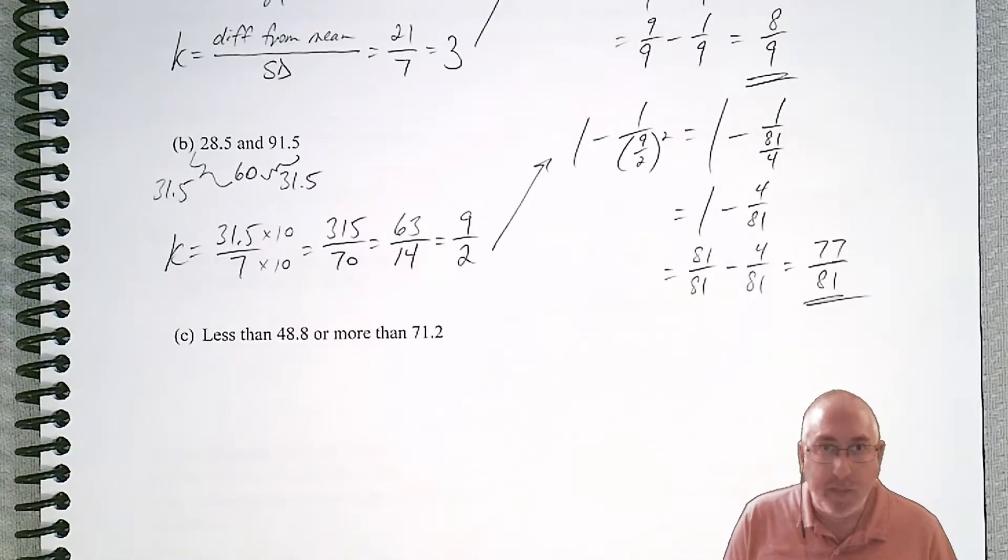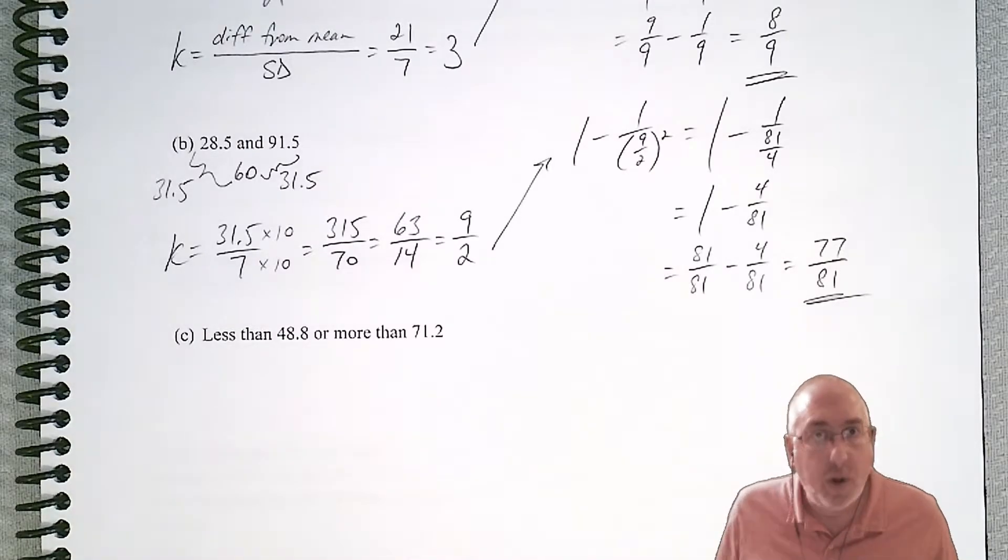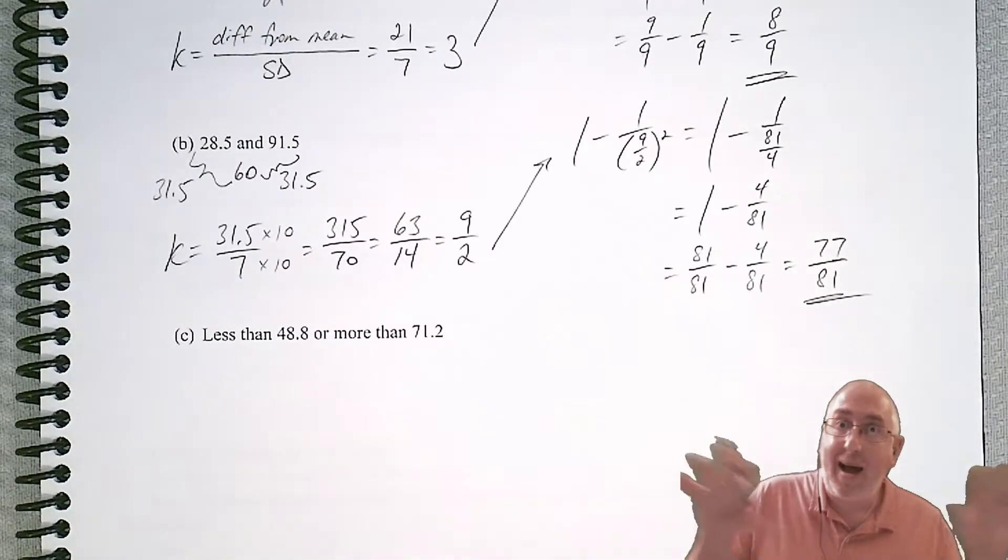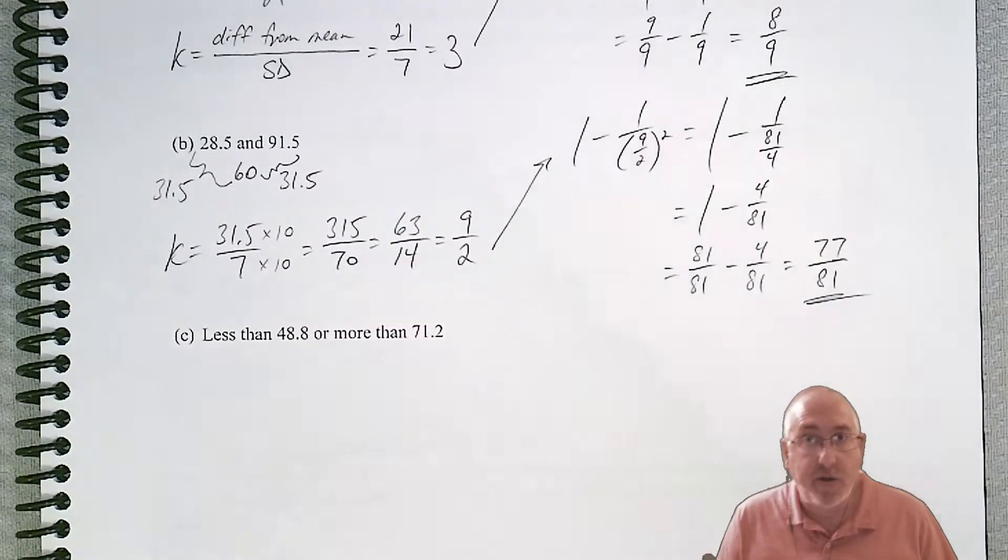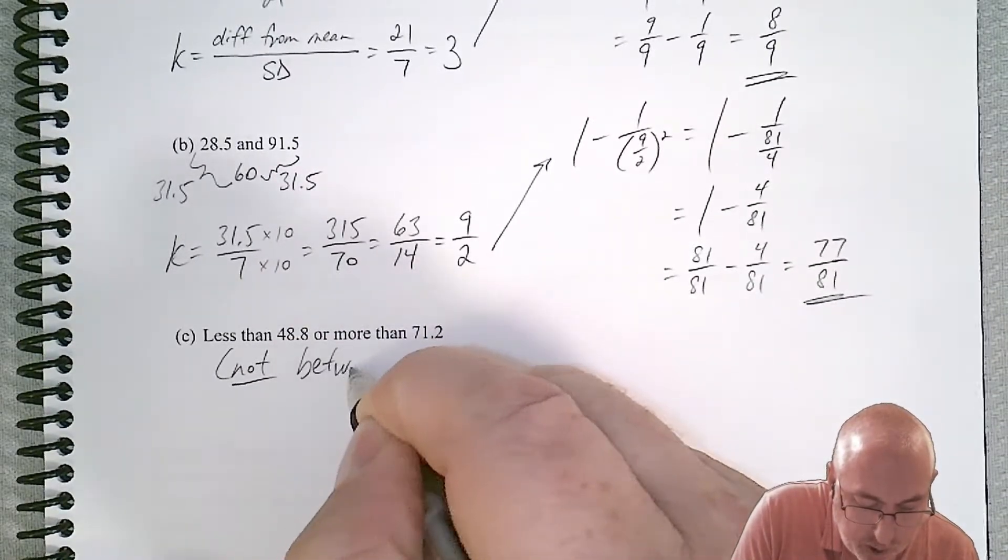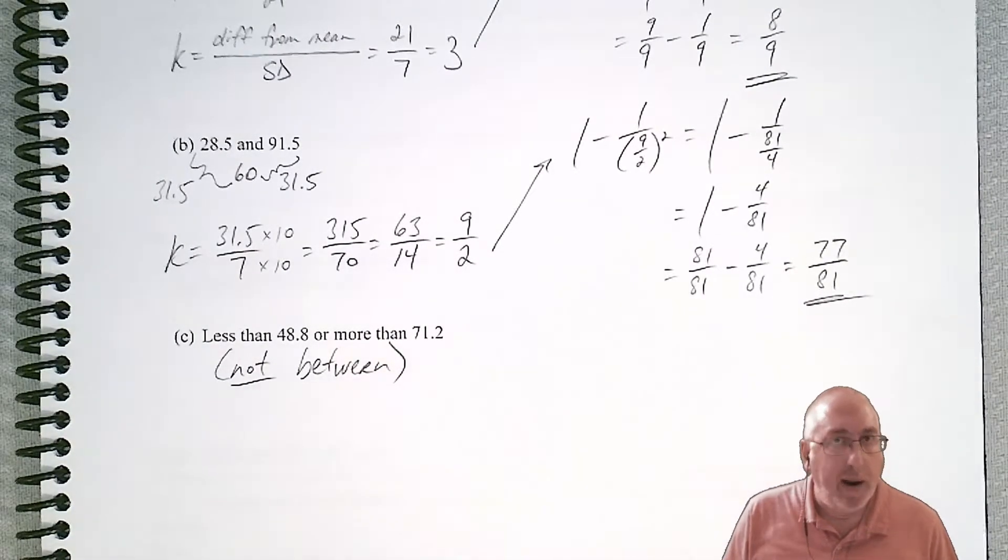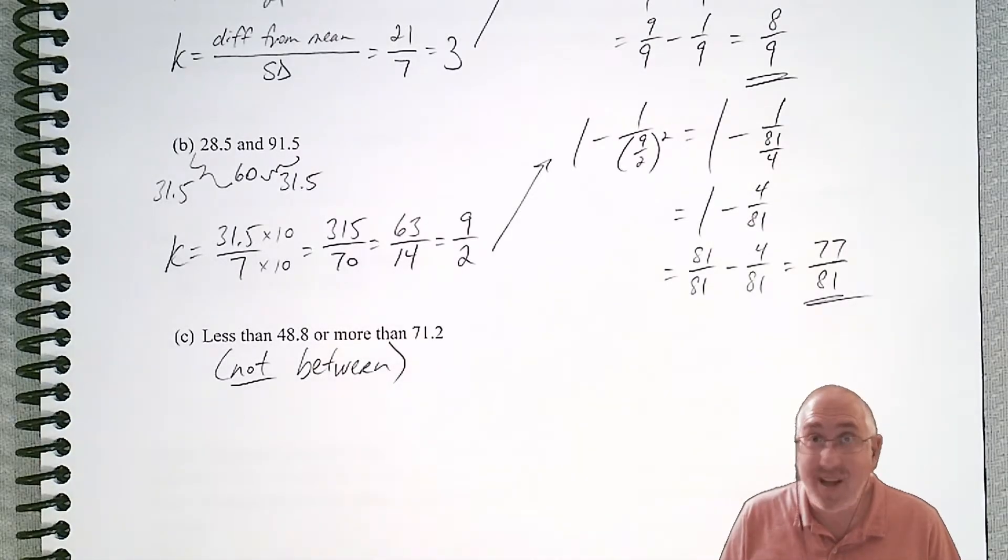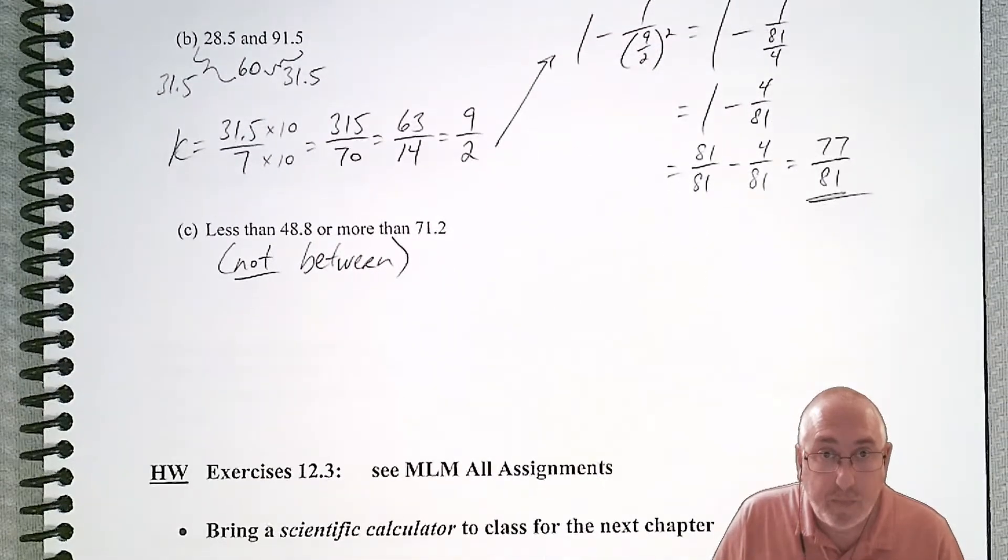Now, the last problem you can see is worded a little bit differently. Because now they don't want what's between those numbers, they want what's outside of those numbers. What's smaller than that minimum and what's larger than the maximum. So another way to think of it is that it's not between. So what do we do differently? And the answer is not much. It still follows the same process as before. We still need to find k. We still need to plug it into Chebyshev's.